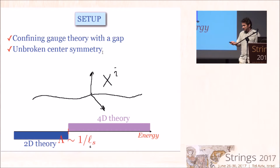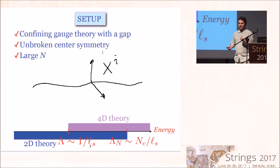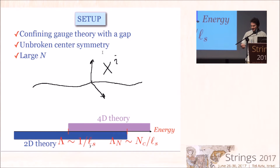This becomes much more interesting in large N, because what happens at large N is that the probability of string interconnections goes to zero, so this two-dimensional theory gets decoupled from the four-dimensional theory. If I take the large-N limit keeping energy fixed, eventually I get a microscopic two-dimensional theory — and this is the main object I'm talking about. This is what I call the worldsheet theory of the QCD string.